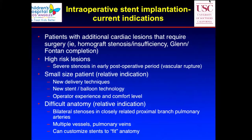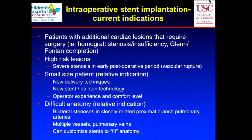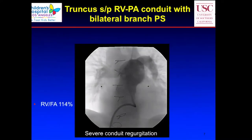Whether to use the operating room is relative, depending on the institution and the experience of the interventionist and the surgeon. Certainly in very difficult anatomy — such as bilateral proximal stenosis where one stent can jail the other and you have to do simultaneous stenting in a small child — that can be very difficult in the cath lab. Multiple vessels, pulmonary veins requiring transeptal puncture, or smaller kids with small vessels where you need to customize your stent to fit the anatomy — all may benefit from the operating room setting.